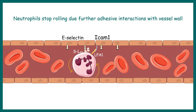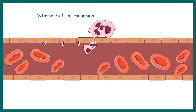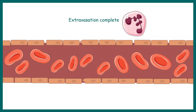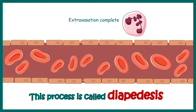Neutrophils slow down further and certain cytoskeletal rearrangements occur, which squeeze the neutrophil through the narrow gap between the capillary endothelial cells. Ultimately, neutrophils move out of the blood vessel and enter the tissue space. This process is also known as diapedesis or neutrophil extravasation, and it is increased during inflammation as more neutrophils are attracted toward the inflamed region.